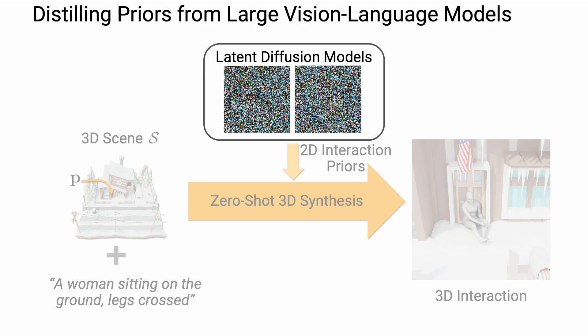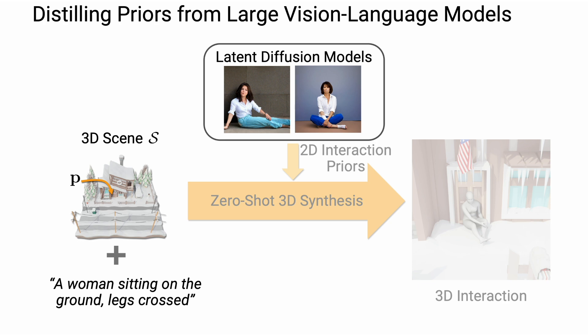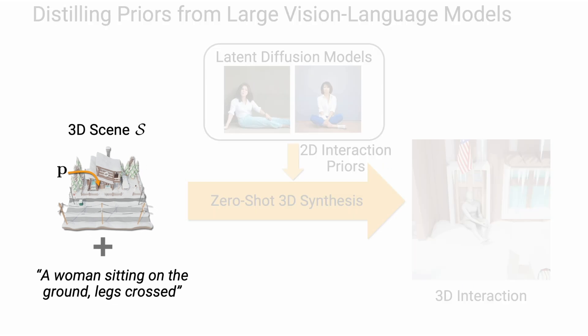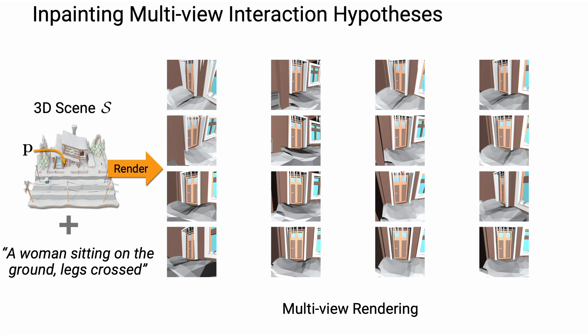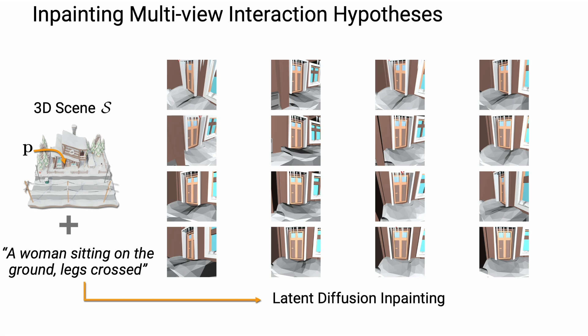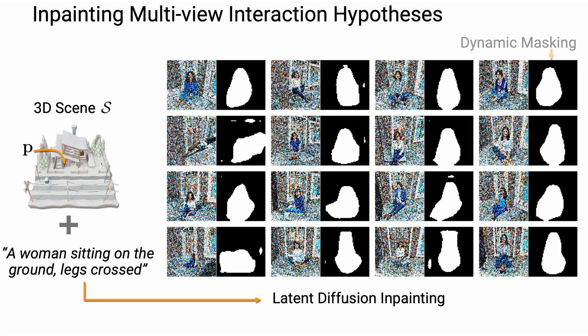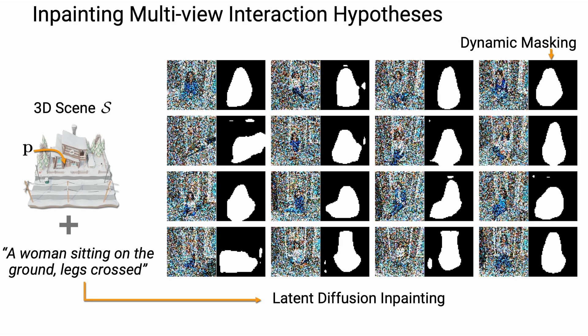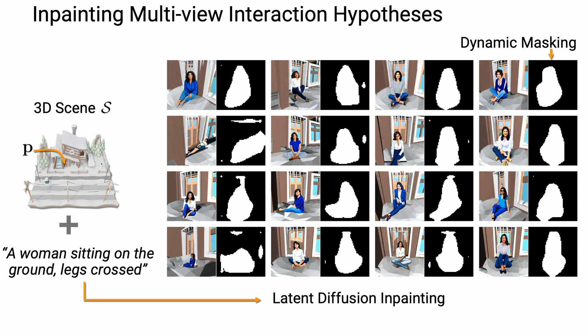We propose to distill interaction priors from large vision language models, which show powerful capabilities in synthesizing 2D human scene imagery. Given as input a 3D scene S, an approximate point location P for the interaction, and a text prompt, we optimize for a 3D human body model performing the action in the scene guided by a large vision language model. We first render the scene into multiple views to capture the local context around P, and leverage latent diffusion inpainting to imagine possible 2D human interactions in each view based on the input text prompt. We develop a fully automated inpainting process by dynamically generating human inpainting masks based on cross-attention maps of latent diffusion to find the region of interest.